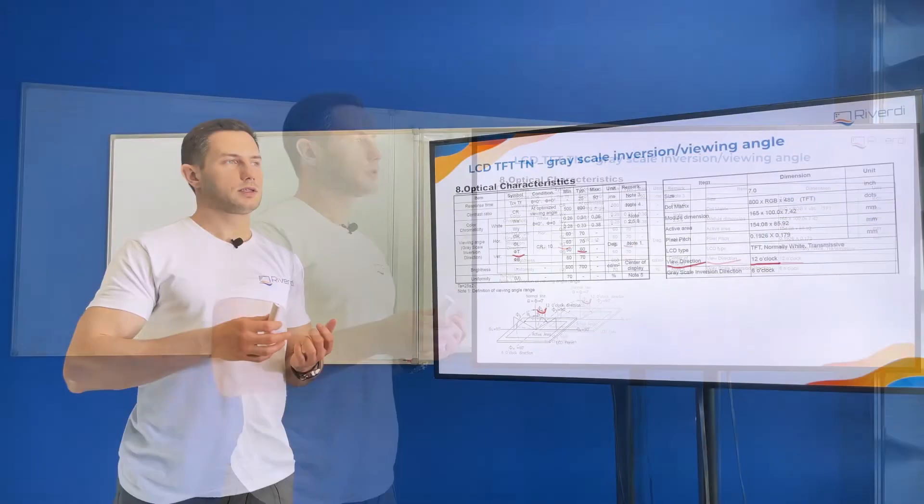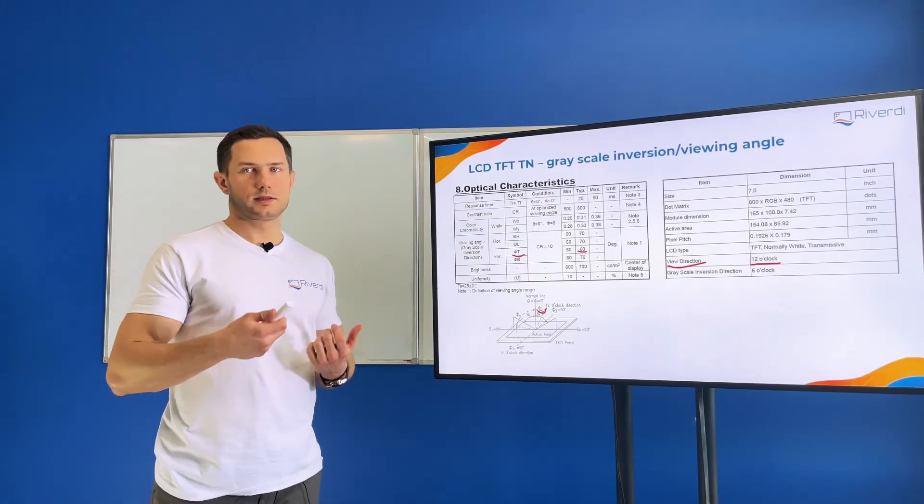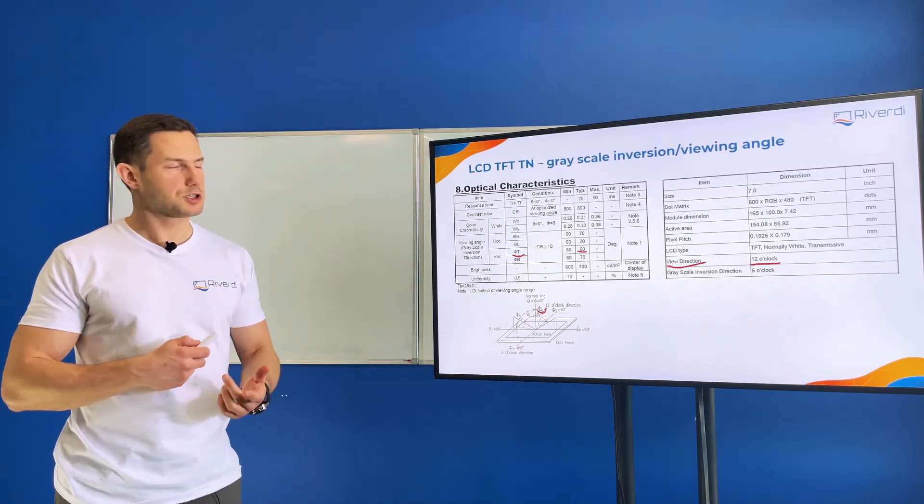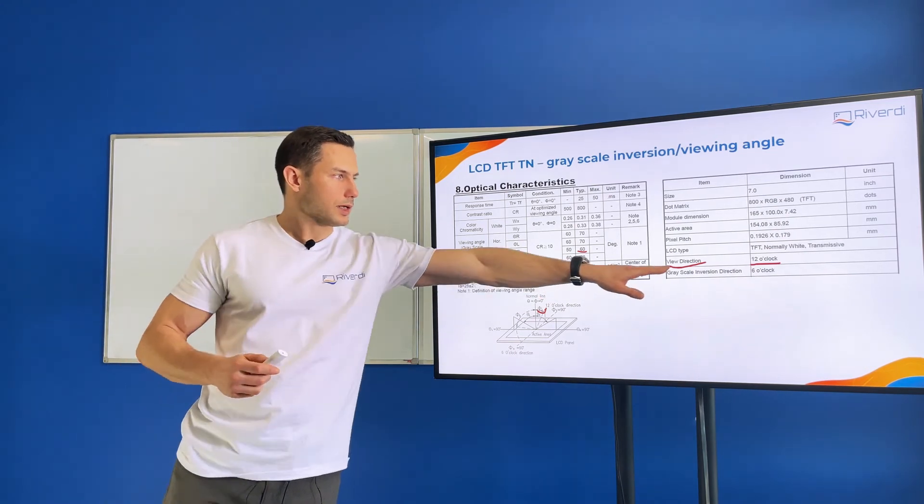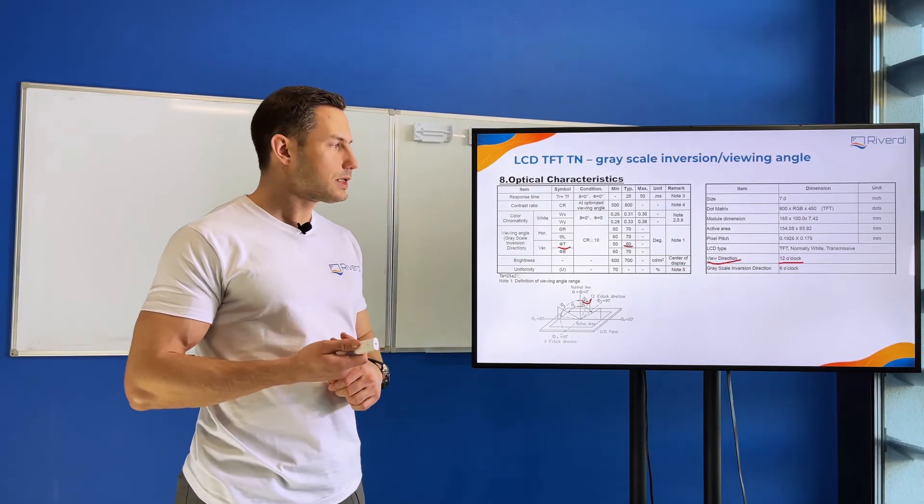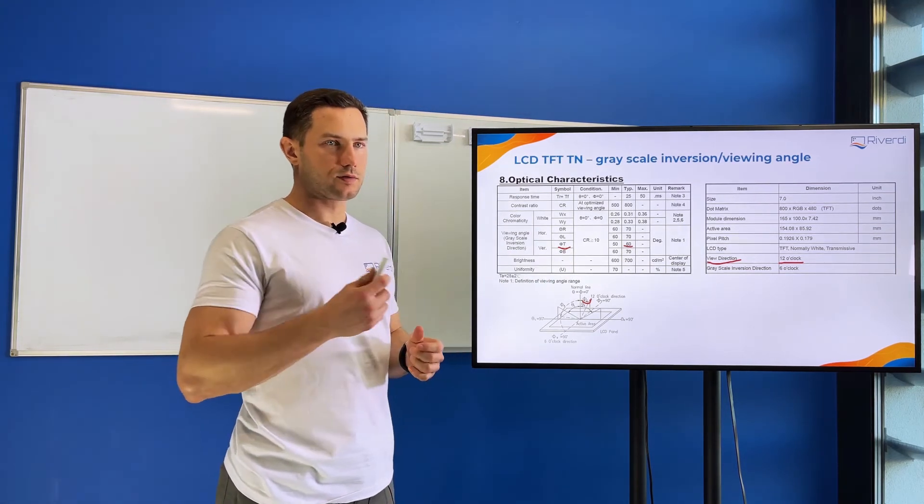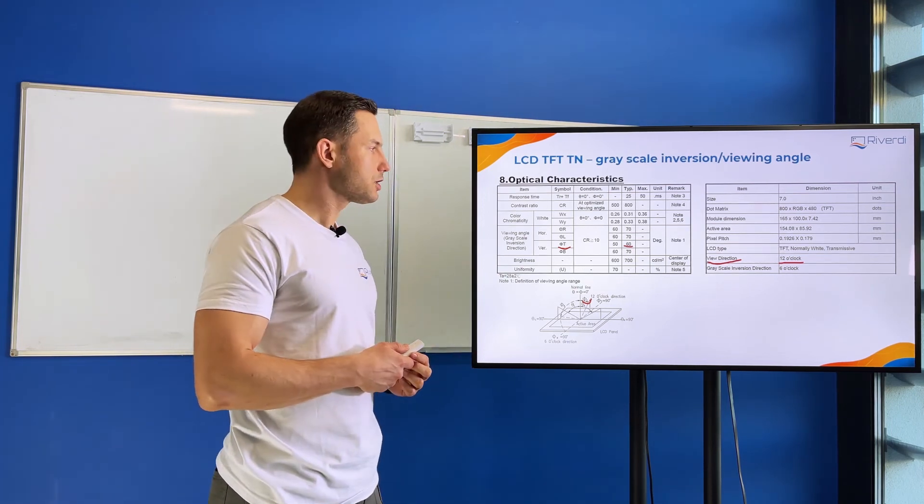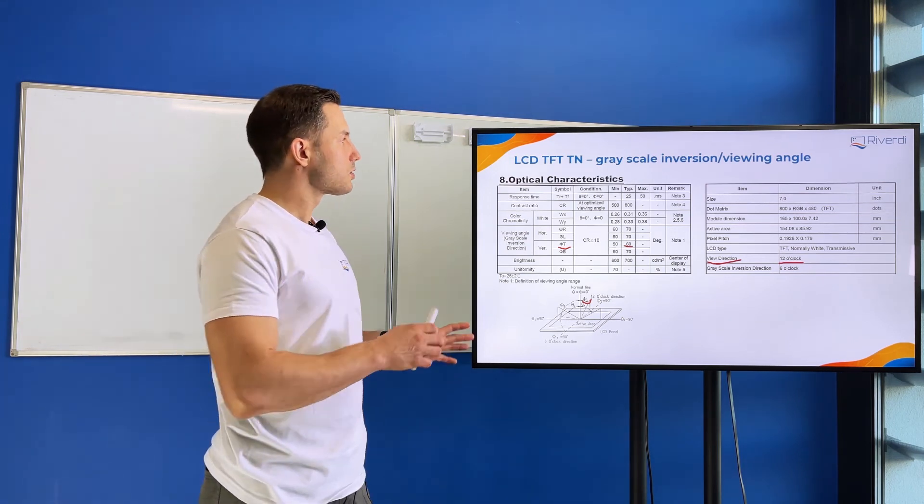If we go to 40, 50, 60 degrees and even a little more, we'll still see the proper image, maybe with lower contrast, but the colors won't change. If we go from the bottom side—the six o'clock position where we have grayscale inversion—we'll see sudden color change after 70 degrees or less, and this is something we want to avoid.